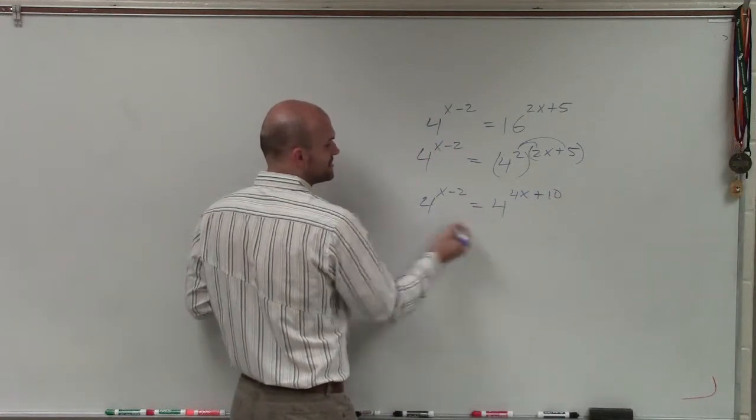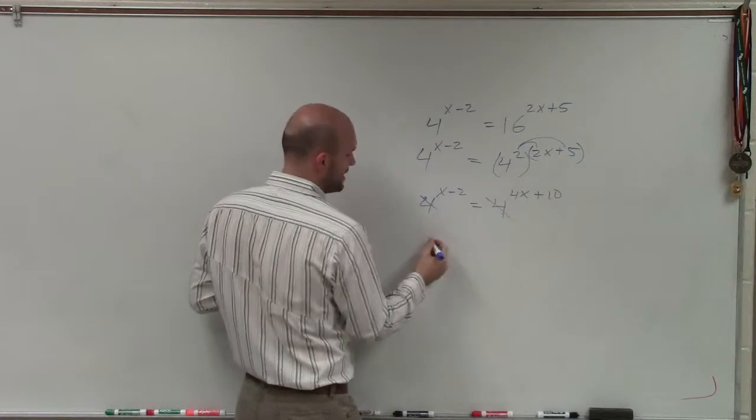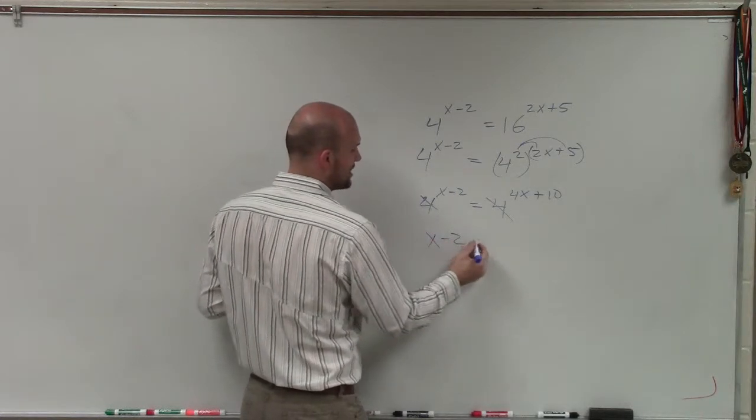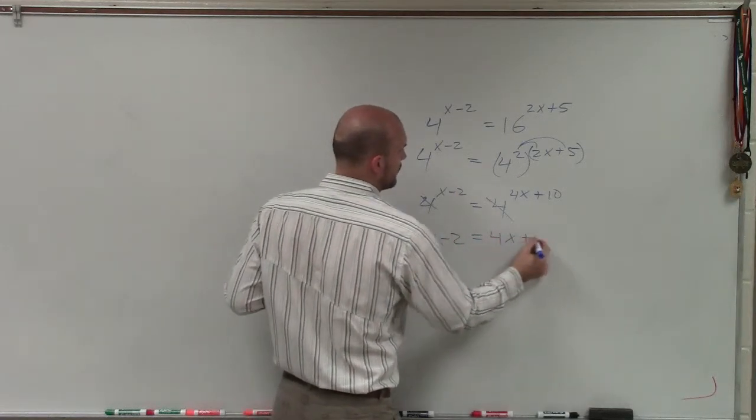Now I know that since my bases are the same, my powers must be equal to each other. So I have x minus 2 equals 4x plus 10.